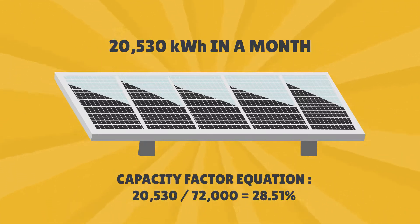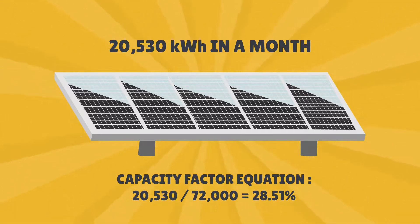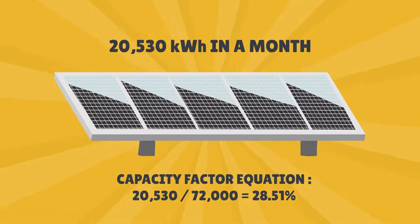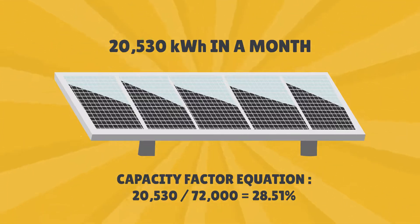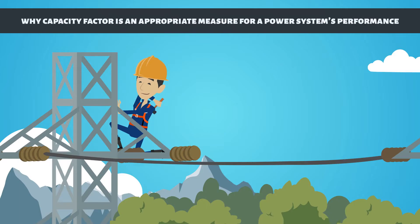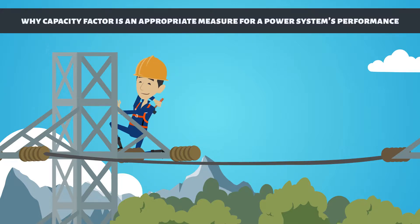Capacity factor equation: 20,530 divided by 72,000 equals 28.51%. There are a number of benefits to consider as to why capacity factor is an appropriate measure for a power system's performance.